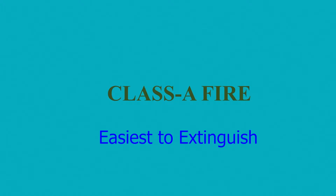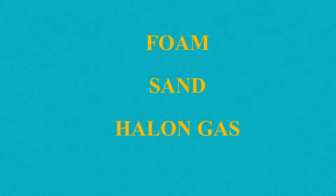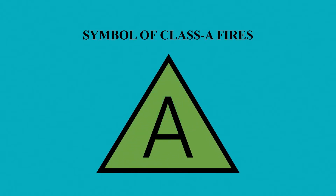Class A fires are the easiest type to extinguish. These fires are extinguished by taking out the heat element of the fire triangle. Mostly water is used to extinguish Class A fires. In extreme cases, foam, sand or halon gas can also be used. Class A extinguishers are identified by a triangle symbol in green color with a capital letter A.